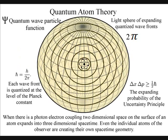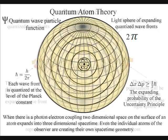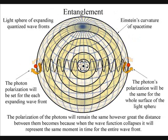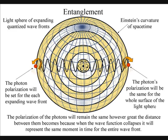The polarization of the light will be the same for the entire surface of the light sphere, creating quantum entanglement and the symmetry and geometry of spacetime.